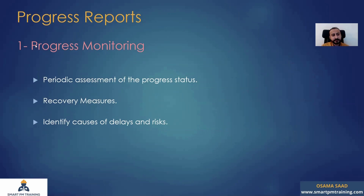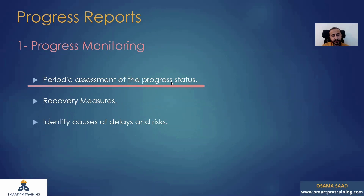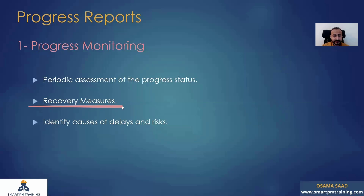Let's go one by one. Progress monitoring is a periodic assessment of the progress status — how you are performing over time in the project. It doesn't make sense to wait until the project end to see where you are. You need some alarms, you need to see where you are going, because it will help you develop recovery actions and take the recovery plan as well. For recovery measures, it is not enough to report that you are in delay, but how you act on it.